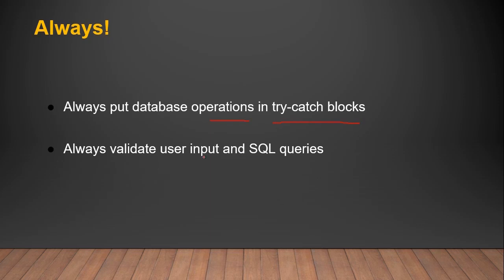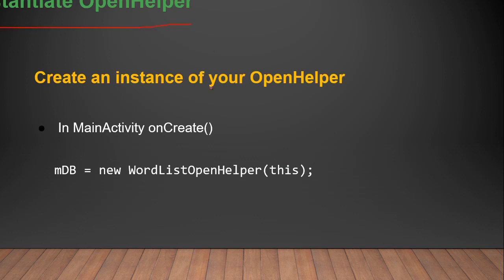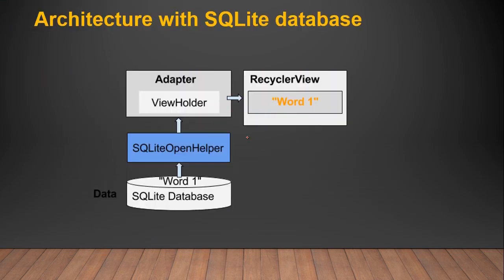Always validate user input and SQL queries. To instantiate the OpenHelper class, create an instance inside the main activity in the onCreate method: myDB equals wordlessOpenHelper, and pass the context. Make sure you initialize the OpenHelper class inside onCreate because onCreate is called once. The architecture with SQLite: you have the database, a class extending SQLiteOpenHelper, and an Adapter class that handles putting data to and getting data from the RecyclerView and the SQLite database.